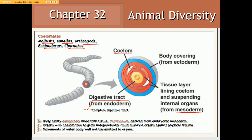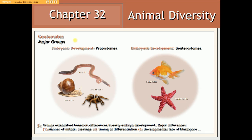Bilateral triploblast coelomates can be classified as either protostomes or deuterostomes. Protostome coelomates include annelids, arthropods, and mollusks, whereas deuterostome coelomates include chordates and echinoderms. Inclusion into either group depends on the manner in which mitosis occurs during early embryonic development, the timing at which stem cells begin to differentiate into adult tissue, and the developmental fate of the blastopore — the opening into the archenteron, or embryonic gut.